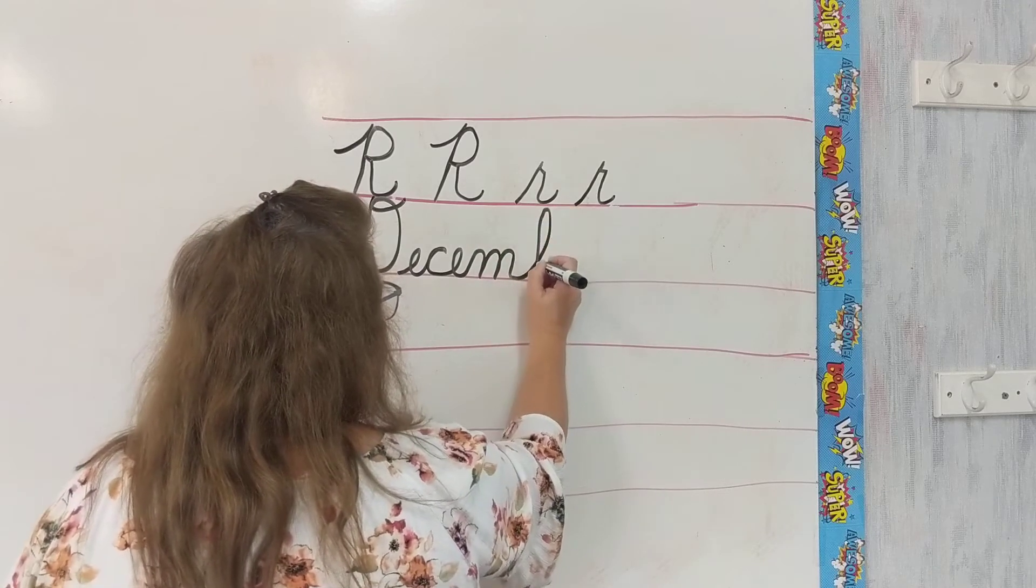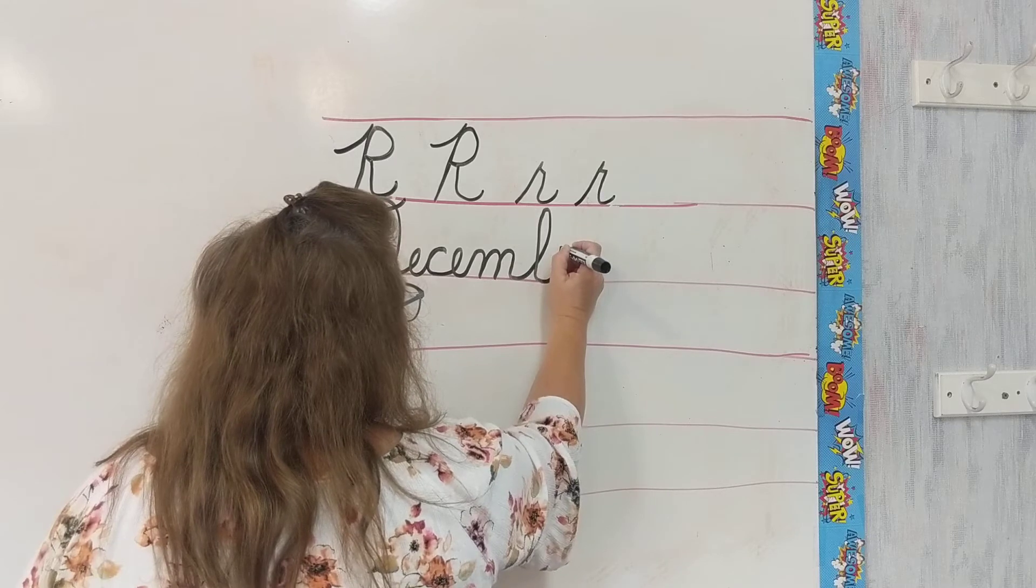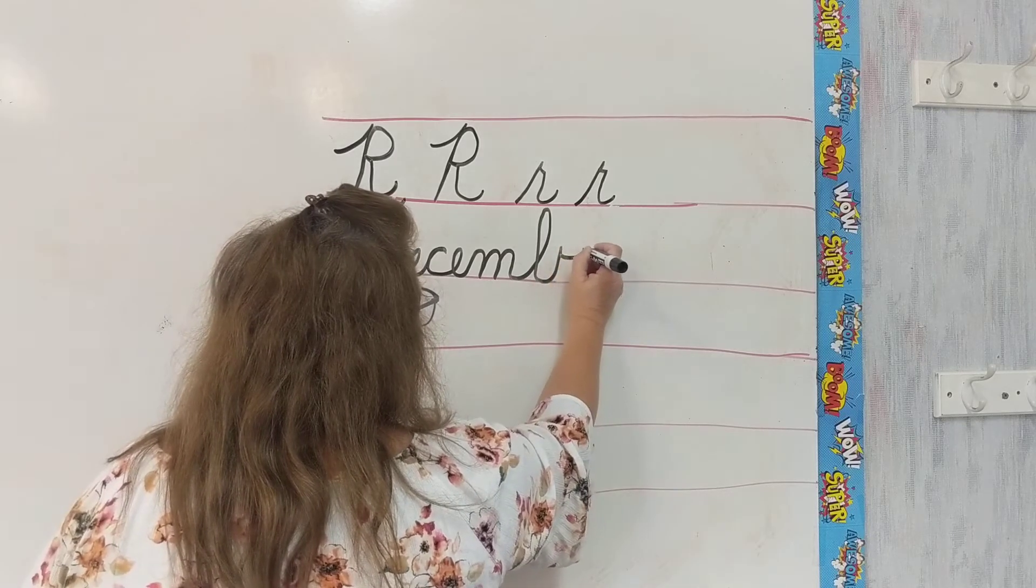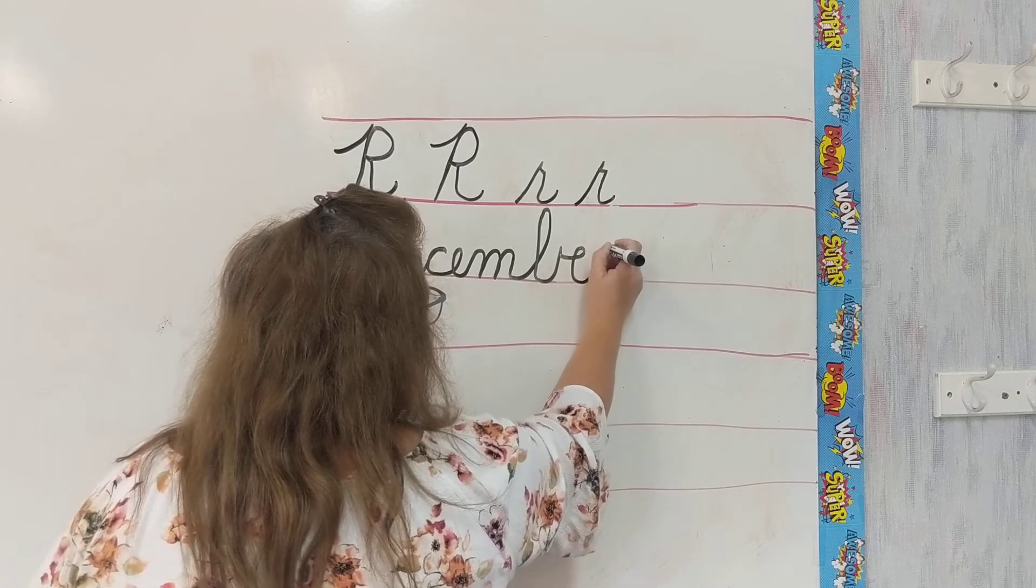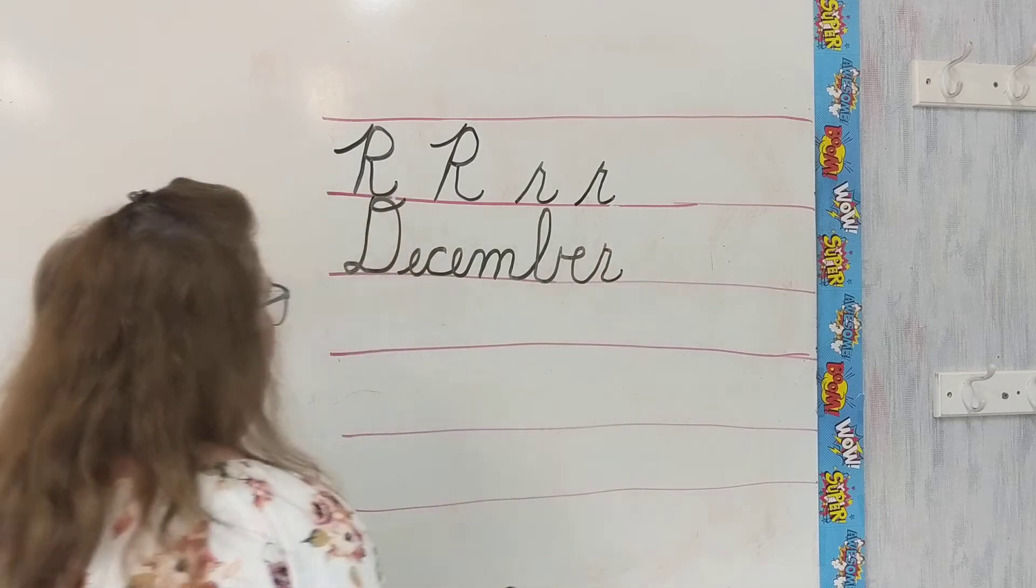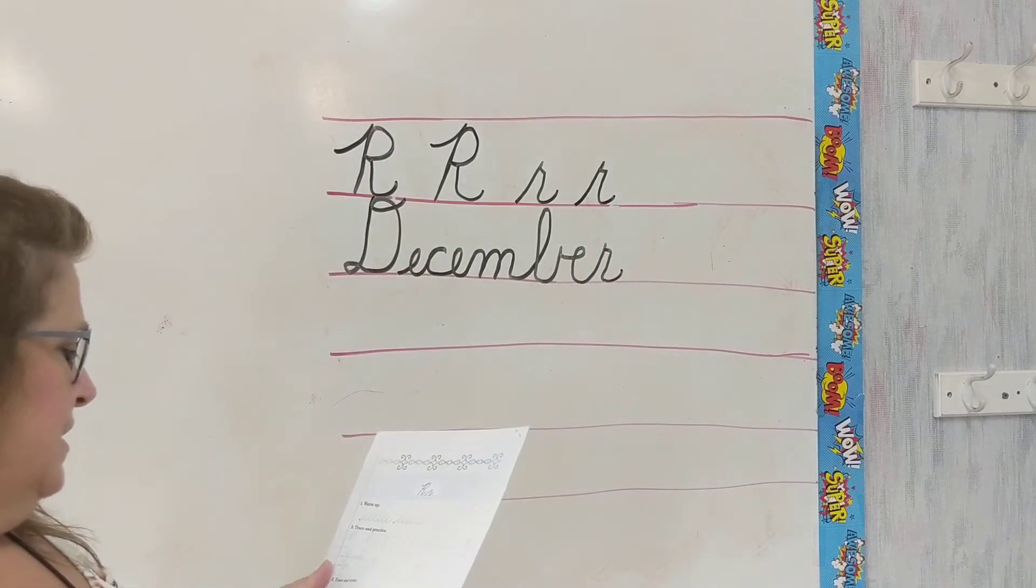Swinging out to go up into my capital B. Coming up, retracing back down, swinging out with my E in the air. Notice that. Coming down, I'm swinging out to go into my R. And that is December.